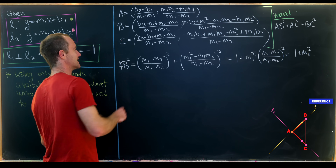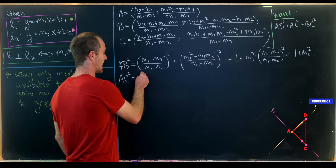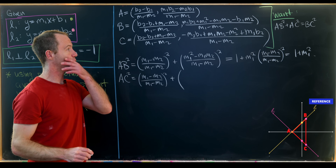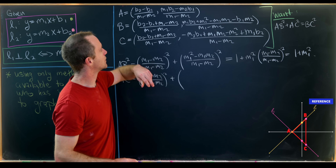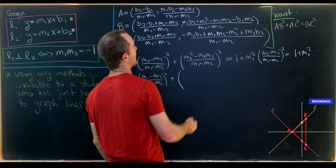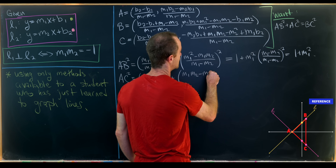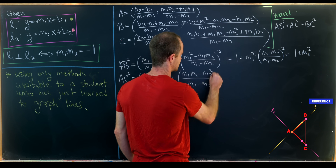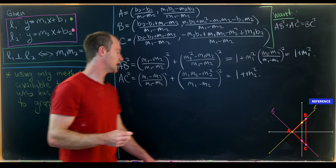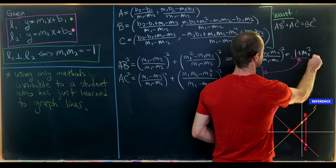Now let's find AC². There's a lot of nice cancellation here as well. The difference in x-coordinates again gives 1, for the same reason as before. For the y-coordinates, the m1·b2 terms cancel and the m2·b1 terms cancel, leaving (m1·m2 minus m2²) over (m1 minus m2), all squared. That simplifies to 1 plus m2². There's a nice symmetry between these two expressions, which probably isn't a big surprise.